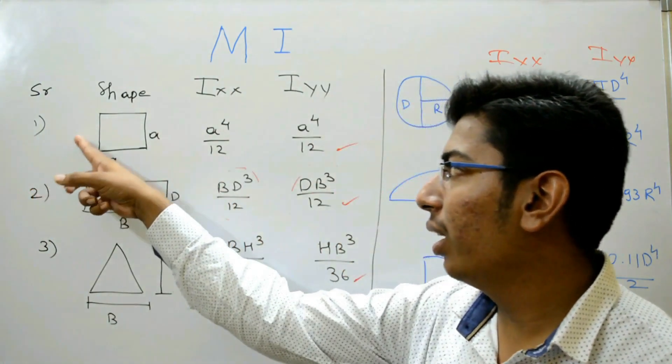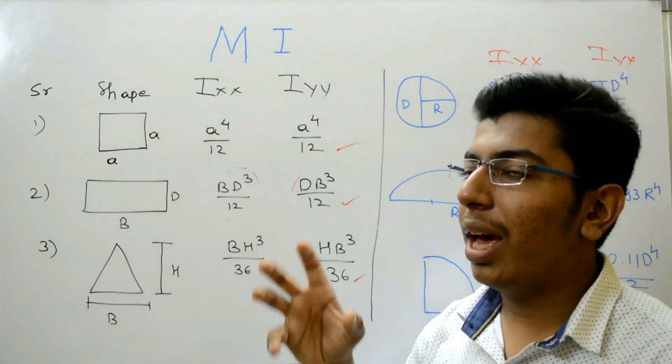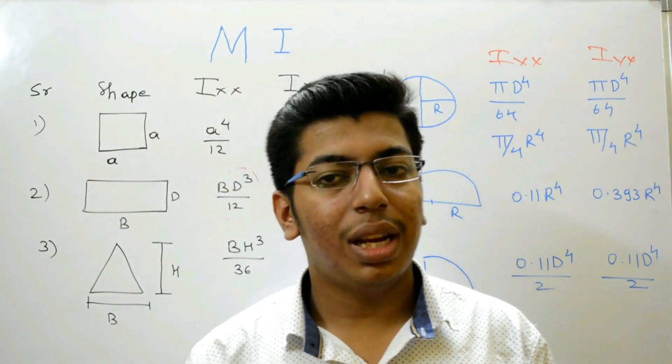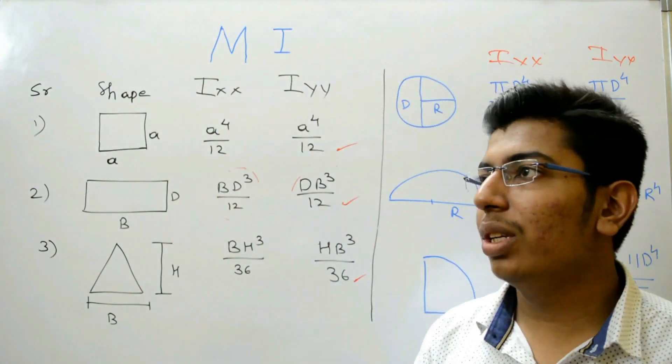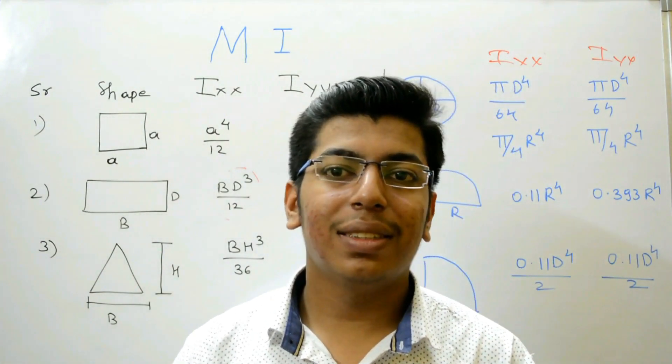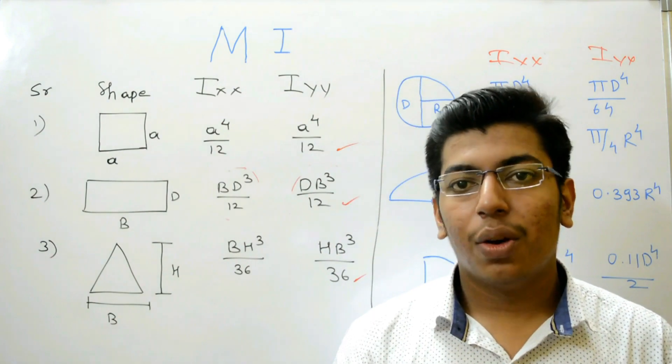First shape, square, having side equal to A. The moment of inertia along x-axis is equal to A raised to 4 upon 12 and the moment of inertia along y-axis is equal to A raised to 4 upon 12.